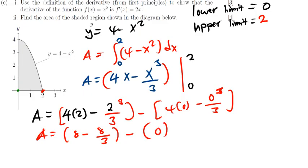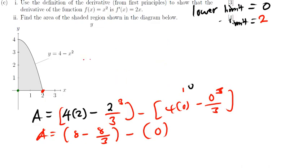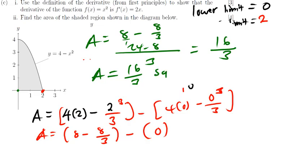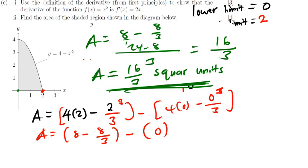From there, area equals 8 minus 8 over 3. Using a common denominator of 3: 8 times 3 is 24, so 24 minus 8 gives 16. Therefore the area is 16 over 3 square units. And that is the answer for this calculus question.